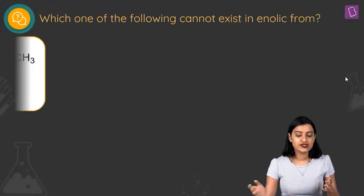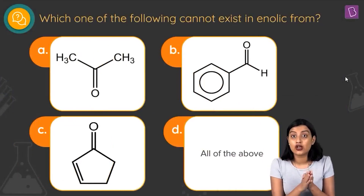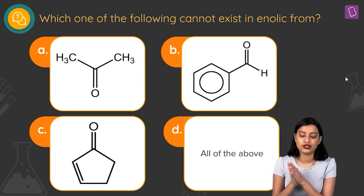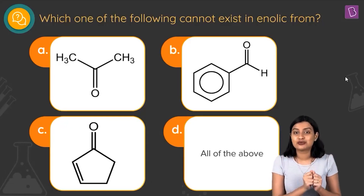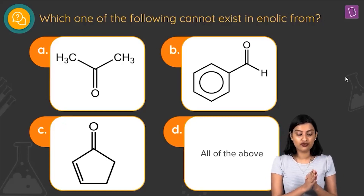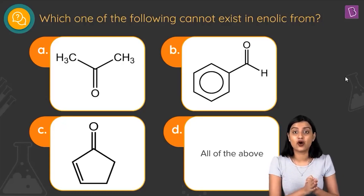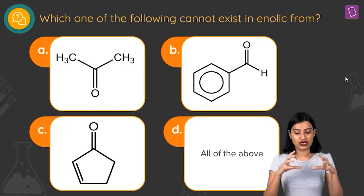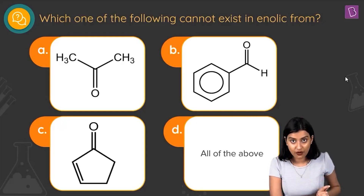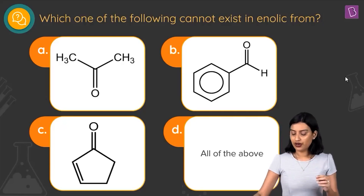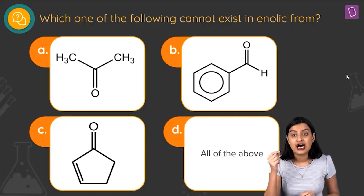The next question asks which of the following cannot exist in enolic form. When you hear keto-enol, the concept that comes to mind is tautomerism. We need to find the molecule which cannot exhibit tautomerism — specifically, which cannot have an enol form.